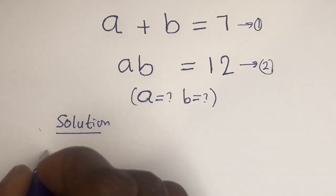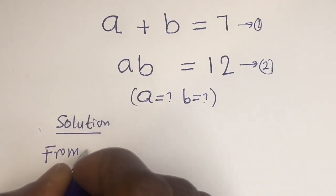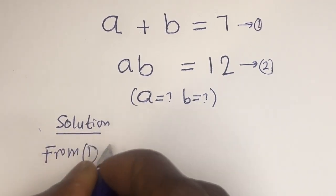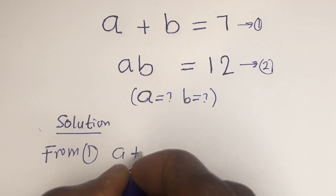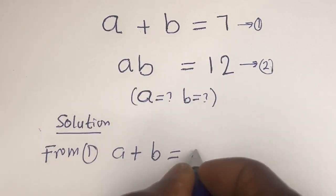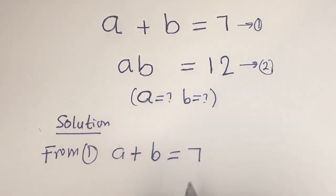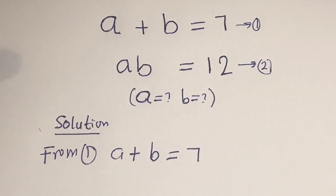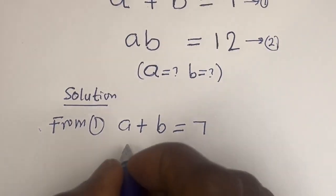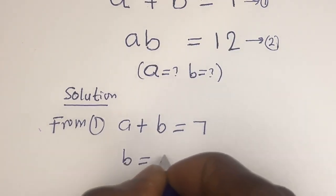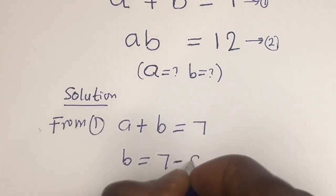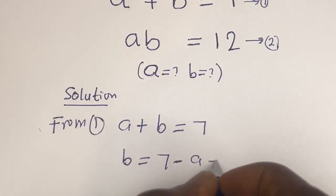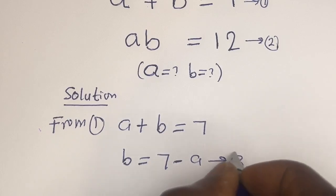From equation 1, a plus b is equal to 7, then b is equal to 7 minus a. Let's call this equation 3.